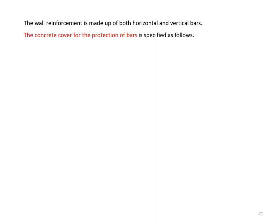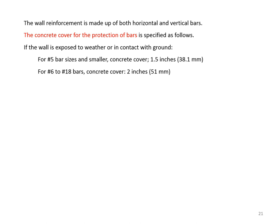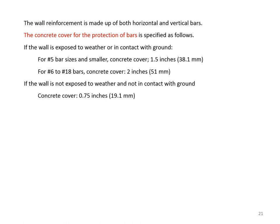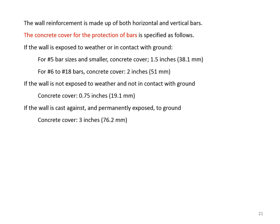The wall reinforcement is made up of both horizontal and vertical bars. Concrete cover for the protection of bars is specified as follows: if the wall is exposed to weather or in contact with ground, cover is 1.5 inches for #5 bars and smaller, and 2 inches for #6 to #18 bars. If not exposed to weather or ground, cover is 0.75 inches. If cast against and permanently exposed to ground, cover is 3 inches.